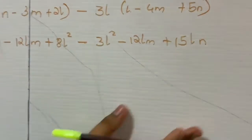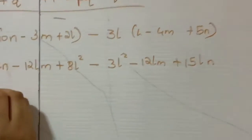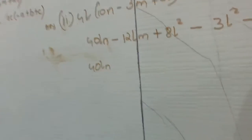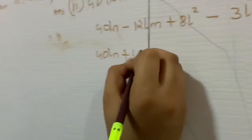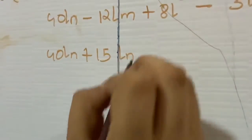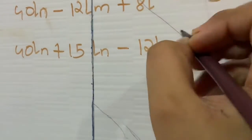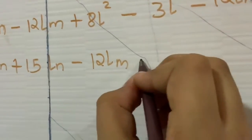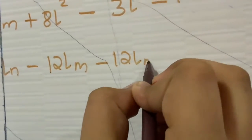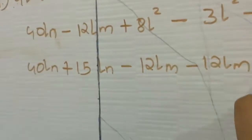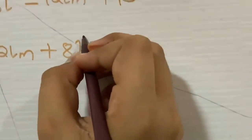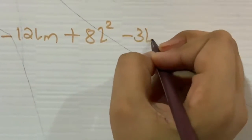So now let us bring the items together. So first is 40LN, and here next one is plus 15LN. And next one is minus 12LM. And the next one is also the same minus 12LM. And the last one the remaining is plus 8L square minus 3L square.